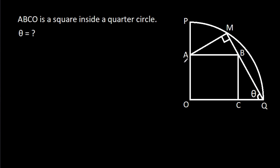In this video, we have been given that ABCO is a square inside a quarter circle, angle AMQ is 90 degrees, and angle CQB is theta. We have to find theta.